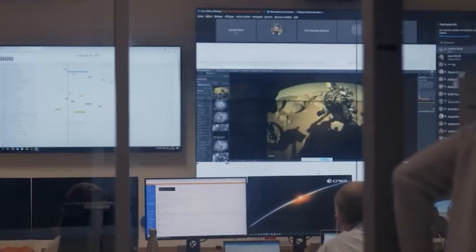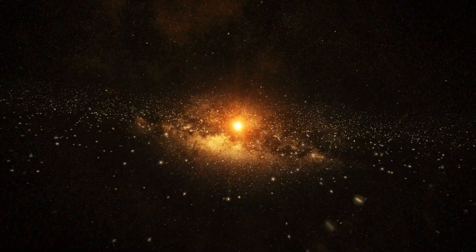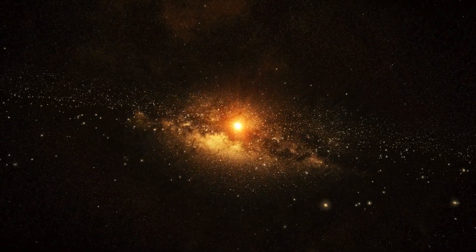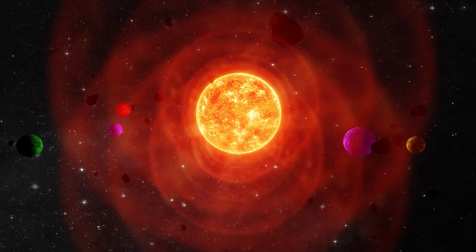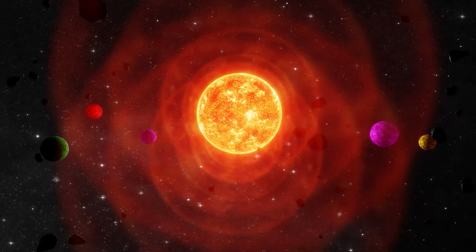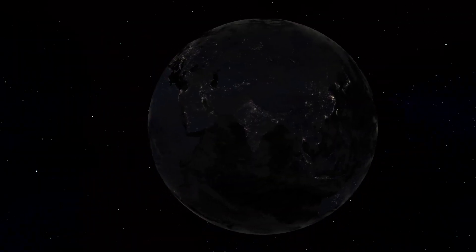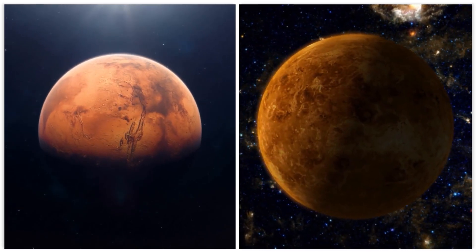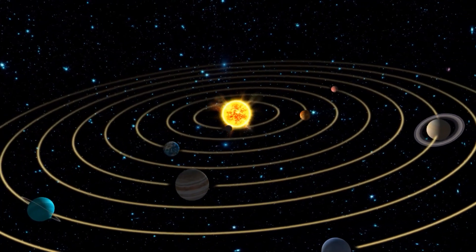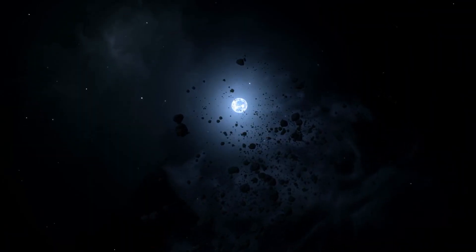Scientists using powerful computer simulations have studied this terrifying possibility. They found that if a rogue star passes within about 93 million miles of our sun, its gravitational pull could throw our planets into chaos. Imagine Earth being nudged out of its stable orbit, either crashing into another planet like Mars or Venus, or worse, being flung out of the solar system altogether to wander as a frozen dark world.